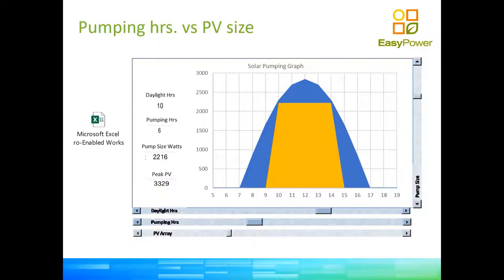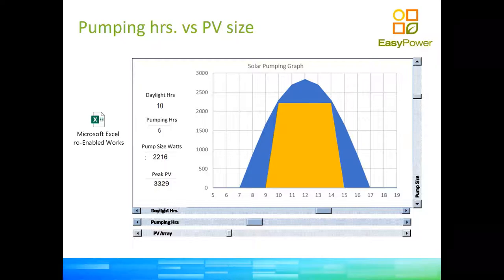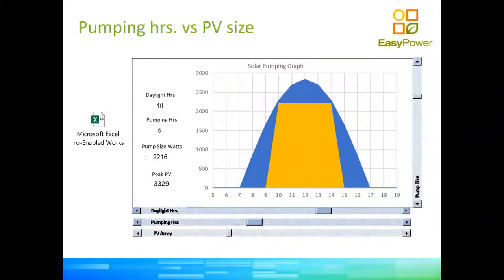At 50 hertz, the pump runs at 2,550 RPM — whatever RPM your motor is designed to run at that frequency — at 100% power. To the left of that flat section, from about 9 in the morning, the pump starts running slowly. If it is a submersible pump you might not even see water, because the pump is just pushing water up the column until it develops enough energy to push water to the surface. If it is a centrifugal surface pump, you'll see a trickle of water quite immediately if there is no back pressure on the outlet.